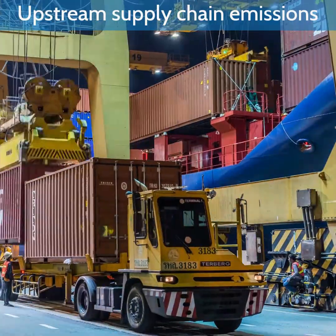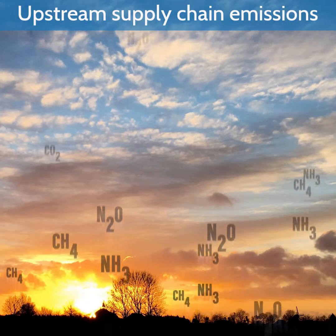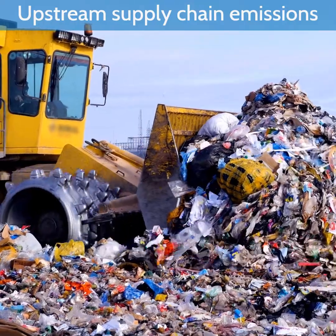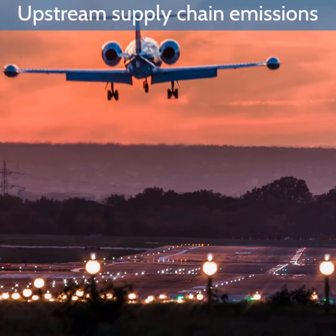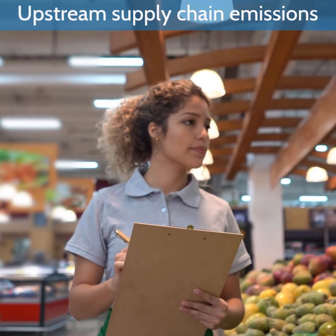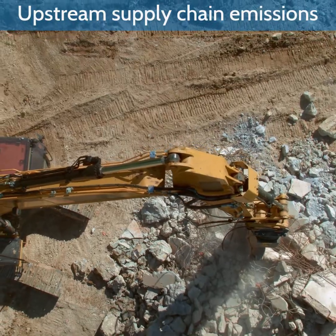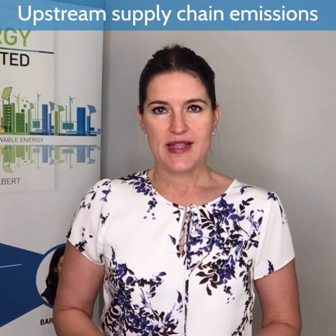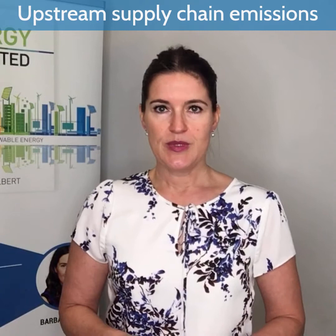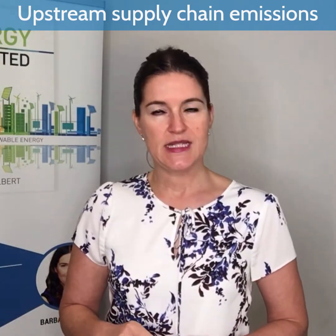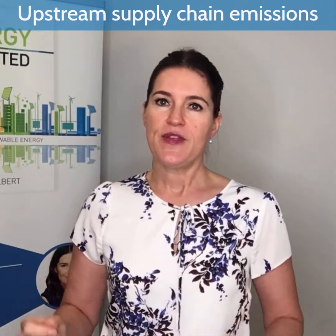Scope 3 emissions happen upstream and downstream of your business. Examples are waste, air travel, the consumption of goods and services, contractor emissions, or leased assets. According to the Greenhouse Gas Protocol, specifically the Corporate Value Chain Accounting and Reporting Standard, there are 15 categories of scope 3 emissions.